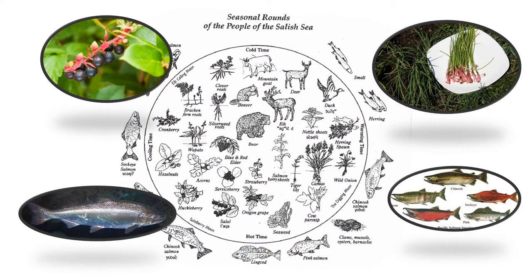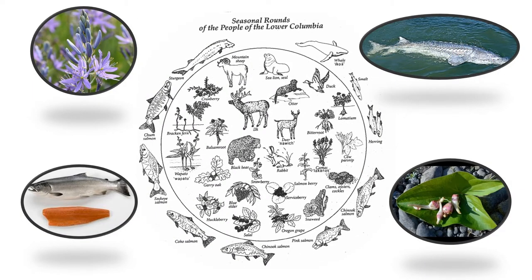Here we have the seasonal round of the people of the Salish Sea. I've highlighted some different species: wild onions, salal berries, and — just like the west coast — our progression of salmon coming back to spawn, beginning in the early part of spring and going all the way into autumn. The people of the lower Columbia seasonal round not only have salmon, but also camas, wapato — a kind of wild potato or carrot root — and something really interesting: sturgeon, which is the strangest looking fish I think I've ever seen.